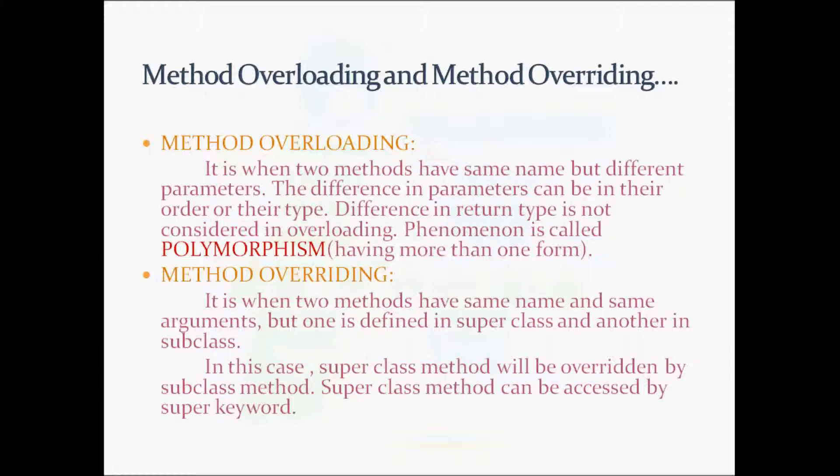Our next topic is method overriding. Method overriding is when two methods have same name and same arguments, but one is defined in super class and another in subclass. In this case, super class method will be overridden by subclass method. You can access super class method by super keyword. This was all about inheritance.